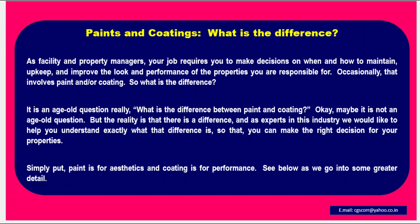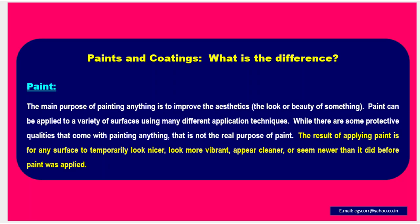The main purpose of painting anything is to improve the aesthetics — that is, the look or beauty of something. Paint can be applied to a variety of surfaces using many different application techniques. While there are some protective qualities that come with painting, that is not the real purpose of paint. The result of applying paint is for any surface to temporarily look nicer, look more vibrant, appear cleaner, and seem newer than it did before paint was applied.